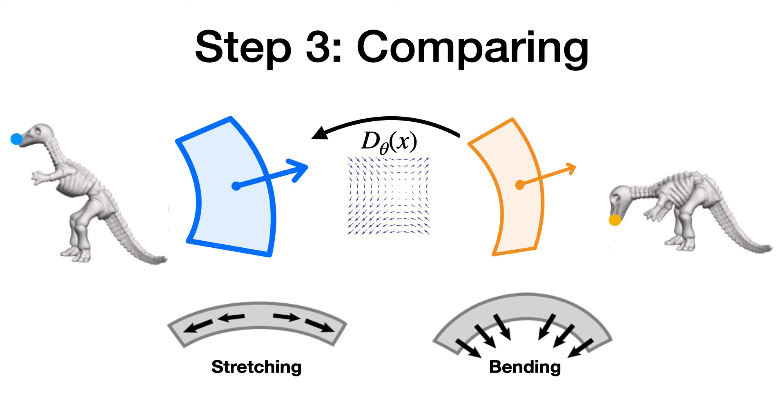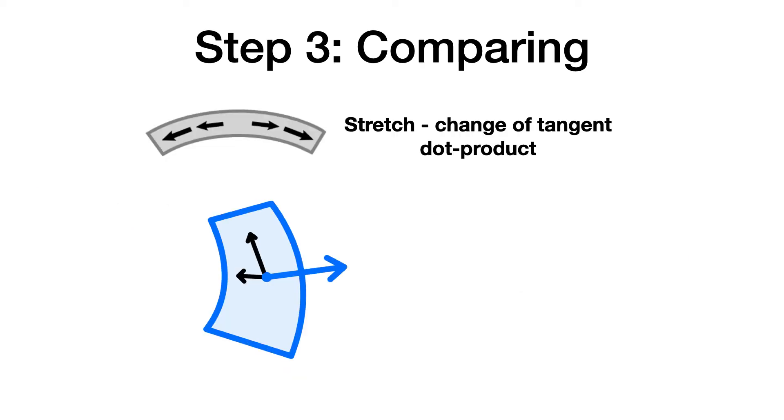Now we've obtained correspondence between input and the deformed space. Our final step is to compare infinitesimal patches near these correspondences to measure the amount of stretching and bending. Intuitively, stretching a surface results in the change of length of some tangent vectors. For example, if this patch was stretched by force going along the red arrow direction, the tangent vector along that direction will become longer. Since vector norm can be defined by the dot product, stretching can then be characterized as the change of tangent dot product.